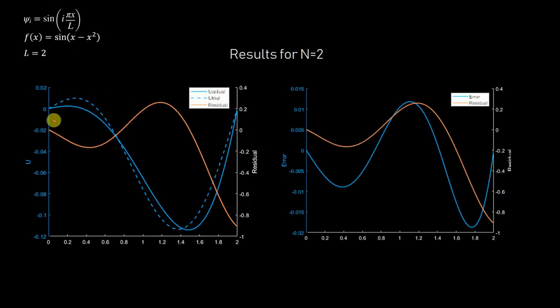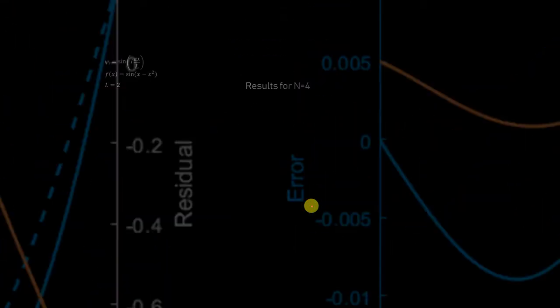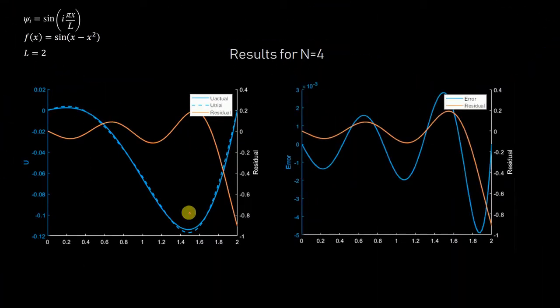For n equals 2, the trial solution starts to follow the shape of the exact solution, though the residual behavior is unclear. The error is still pretty large. For n equals 4 we are pretty close — almost there — but still a bit higher, and the residual behavior remains unclear.